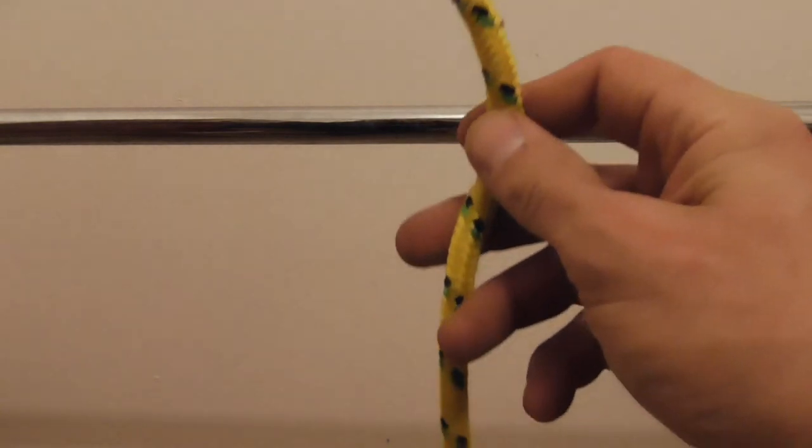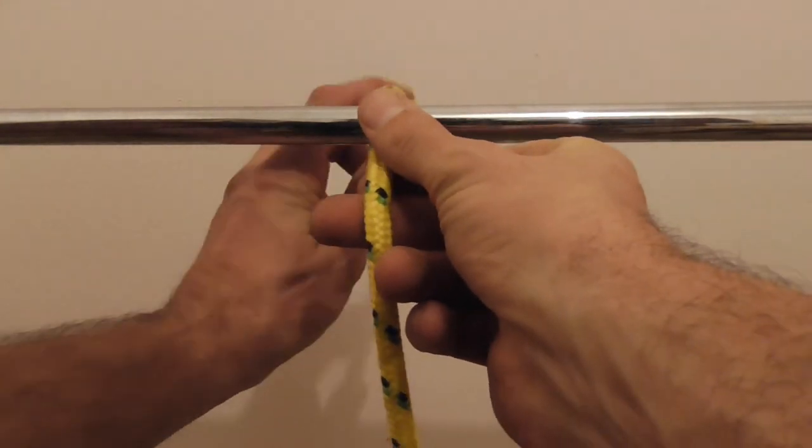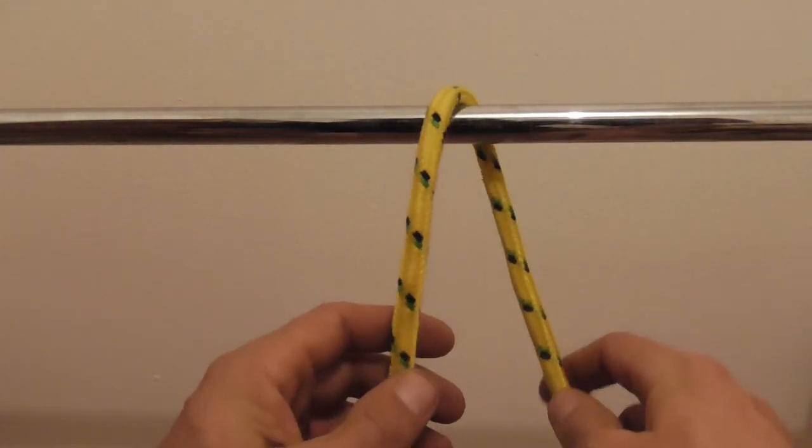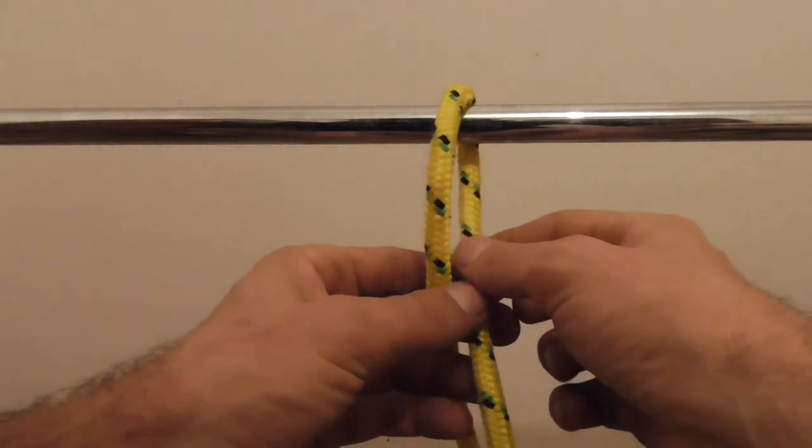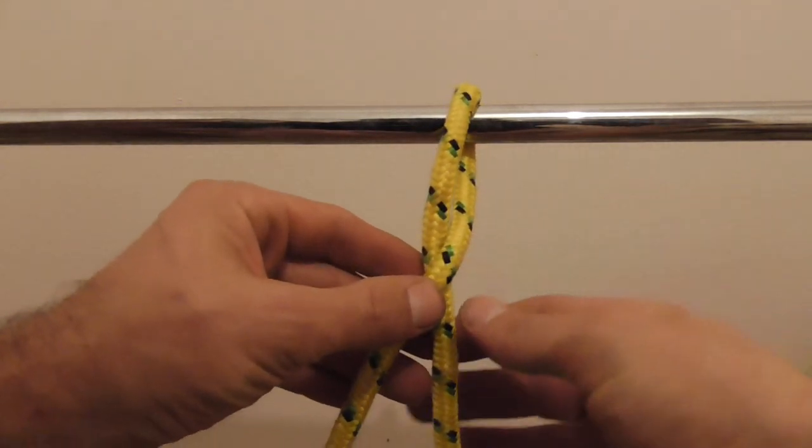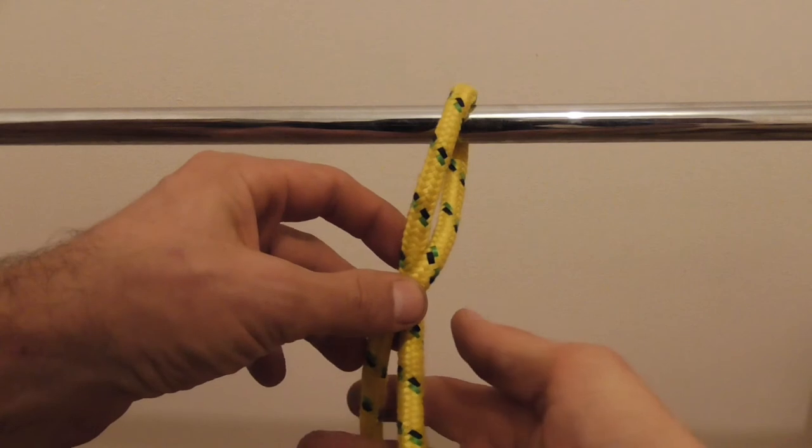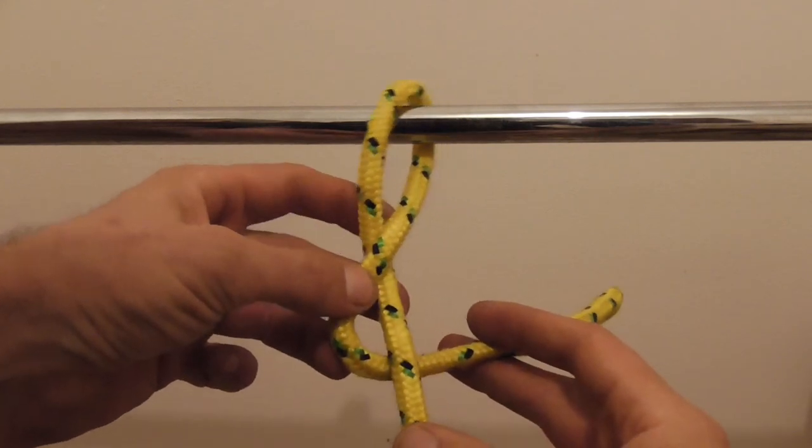To tie this knot, take the rope and pass it over the object you're tying to, then pass it over the standing part and back around the other side of the standing part.